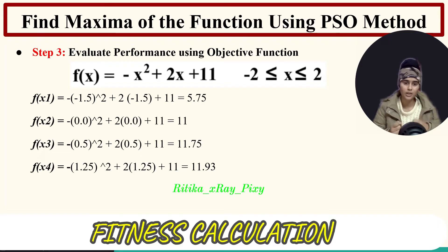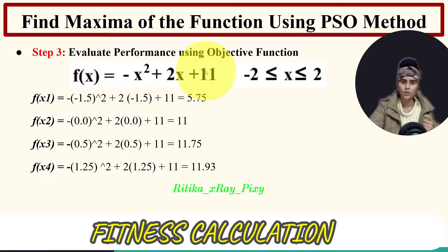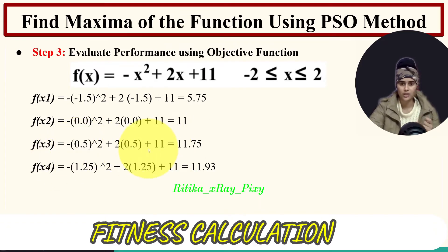Step 3: calculate fitness value for each particle. We solve this maximization problem directly without transforming into a minimization problem, so we consider the maximum value in comparisons. For particle 1, position = -1.5: f(-1.5) = -(-1.5)² + 2(-1.5) + 11 = -5.75. For particle 2, position = 0.0: fitness = 11. For particle 3, position = 0.5: fitness = 11.75. For particle 4, position = 1.25: fitness = 11.93.